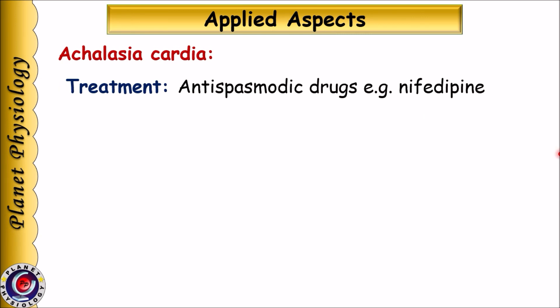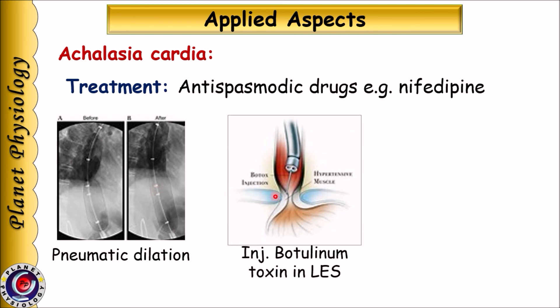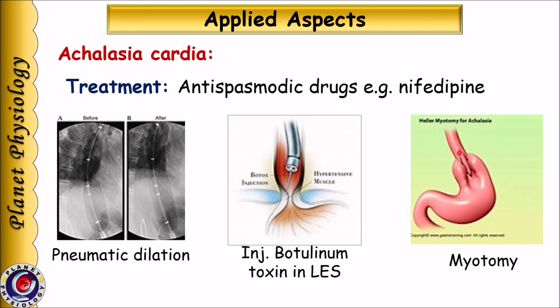Treatment for achalasia cardia is aimed at relaxing or opening the sphincter. This can be achieved by antispasmodic drugs like nifedipine, which relaxes the sphincter. It can also be achieved by pneumatic dilation — where a balloon-tipped catheter is passed to the lower esophageal sphincter and the balloon is inflated to open it. Localized injection of botulinum toxin can also relax the sphincter. The surgical option is partial myotomy.